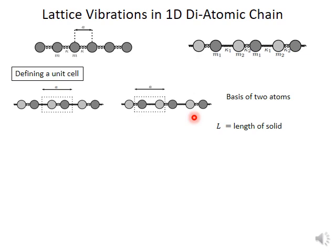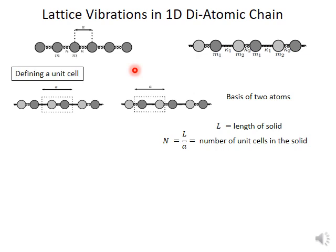This means that if L is the total length of the one-dimensional solid, the number N — which is the total length divided by the length of the unit cell — gives the total number of unit cells. This number would not equal the number of atoms in the solid, because each unit cell now contains two atoms. So the number of atoms would be twice the number of unit cells — that is the main difference in a diatomic chain compared to a monoatomic chain.